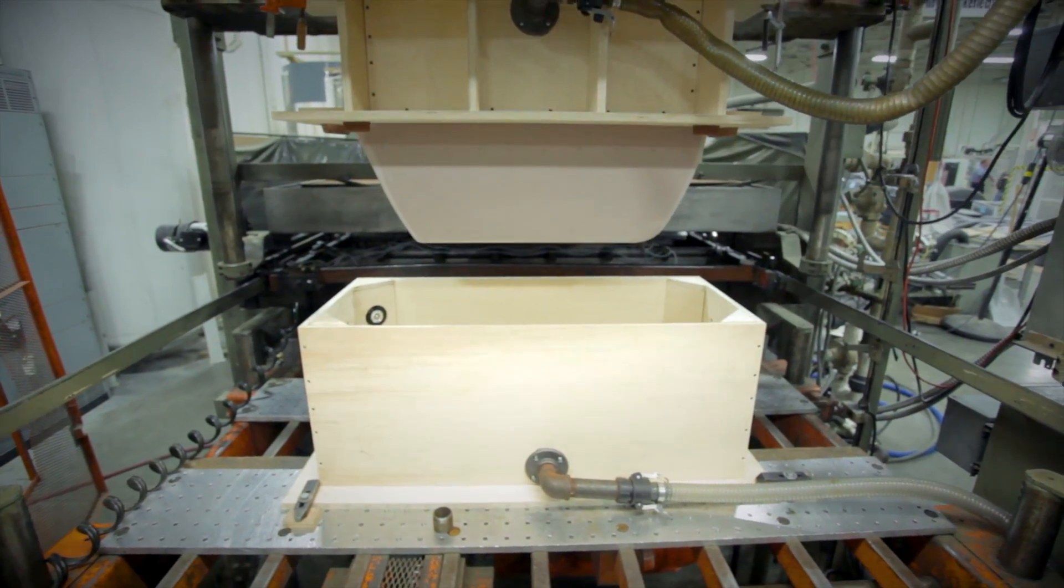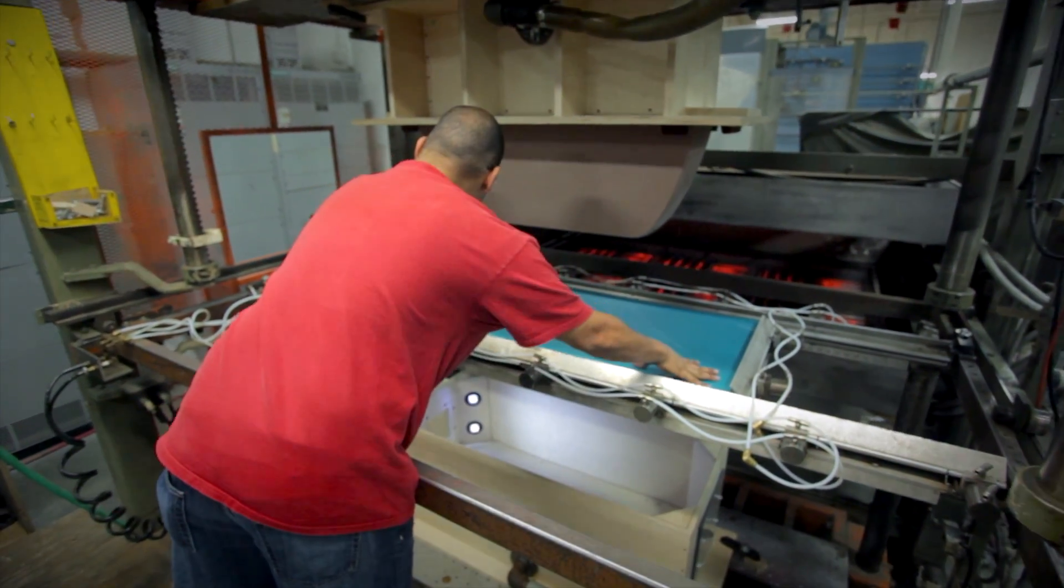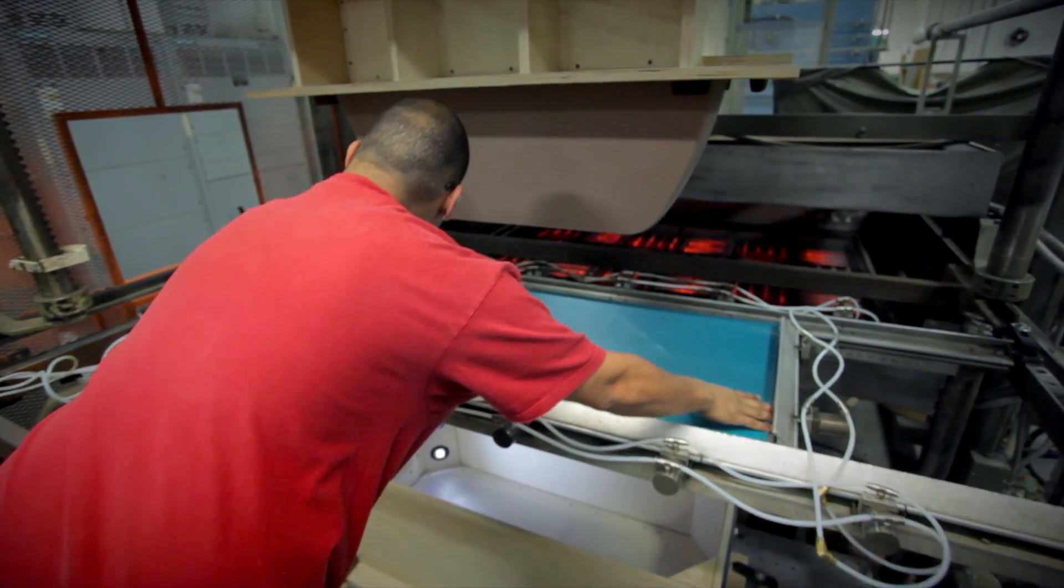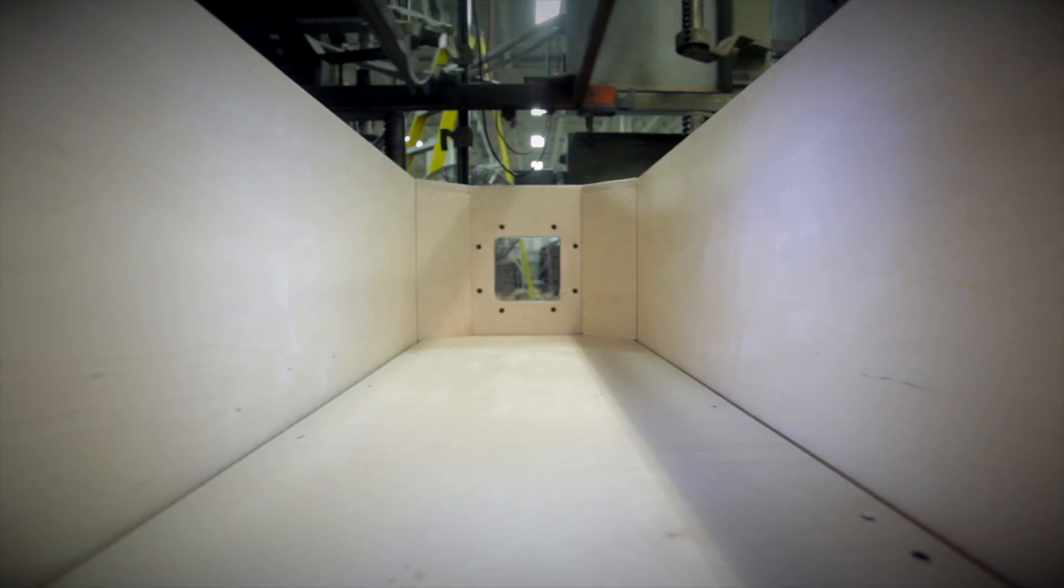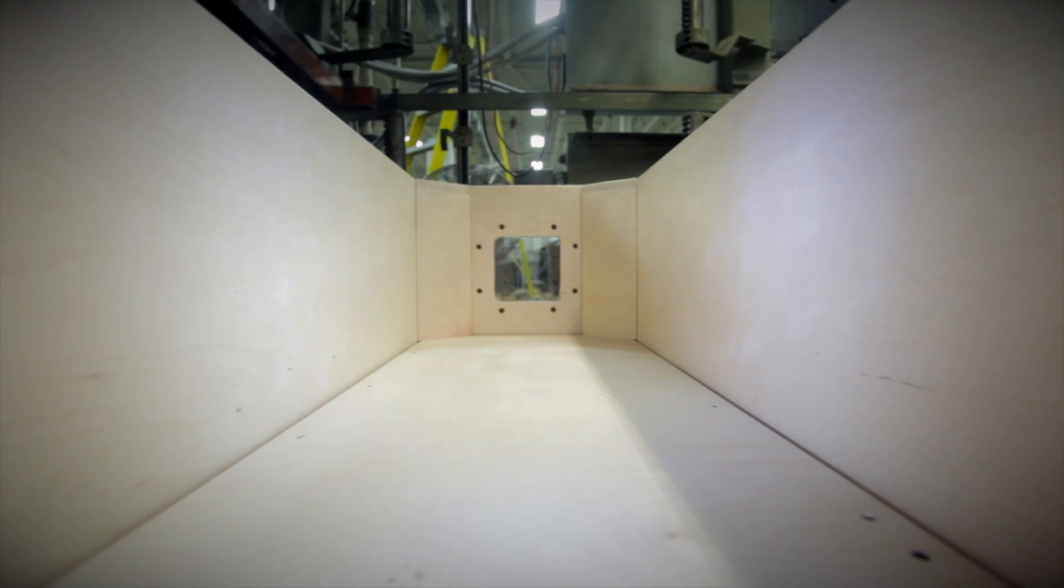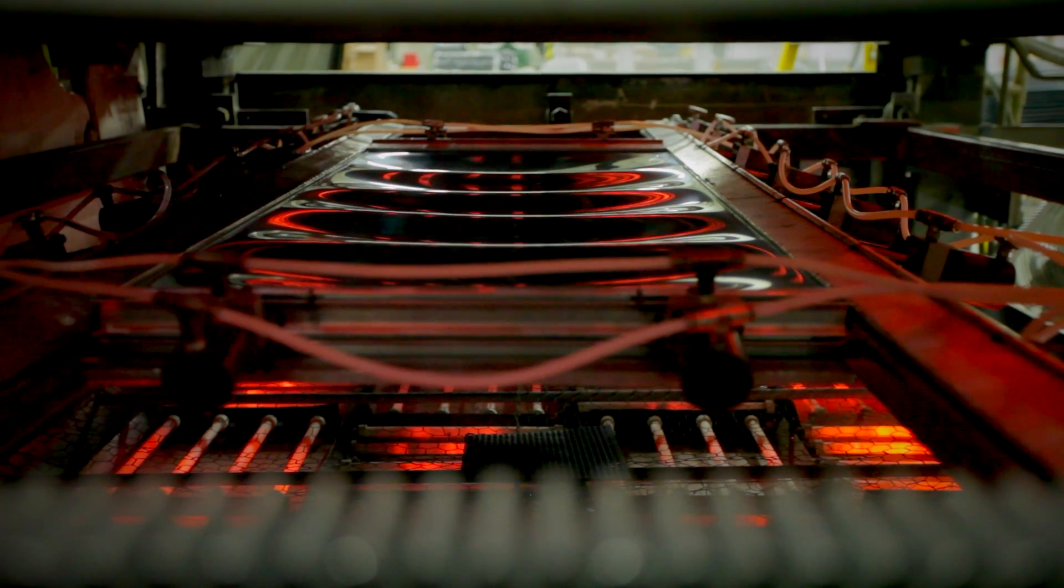When the mold and draw box are complete, they are mounted to the vacuum forming machine. Heating zones and times are set, as well as mold and draw box motions for initial sampling.